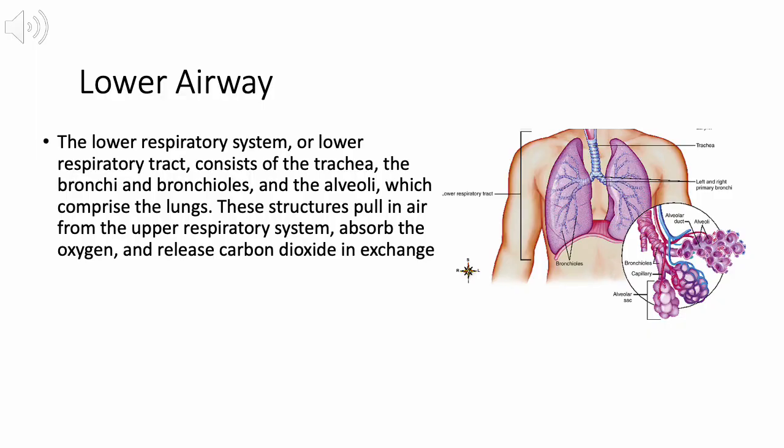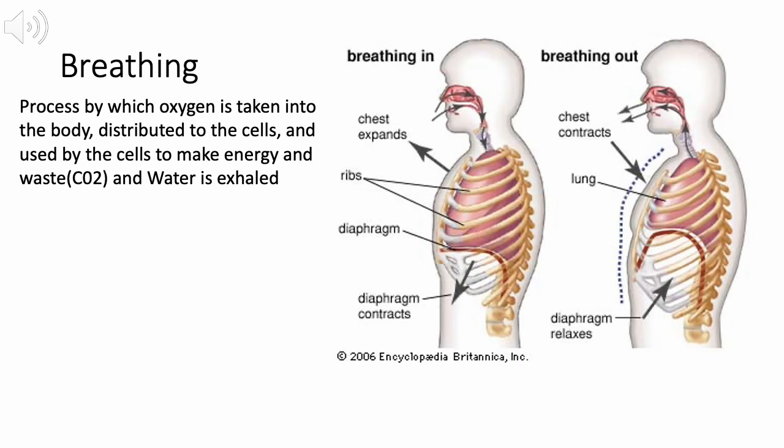The following diagram depicts the lower airway. As you can see, the respiratory tract becomes smaller and narrower until it terminates at the alveoli, the smallest component of the lower respiratory system. The most common medical problems associated with the lower respiratory tract include bronchitis, asthma, and COPD.